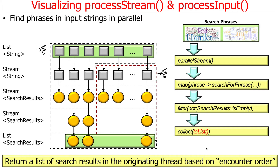The results are joined back together in the originating thread based on the so-called encounter order. For example, if the phrases were the names of musical notes — do, re, mi, fa, so, la — then after searching and filtering, the results will come back in the same order: do, re, mi, fa, so. The default behavior gives back results in encounter order. The computations all run independently in whatever non-deterministic order is most efficient, but results are put back in encounter order. If you don't like that, you can pass an unordered flag and get them back in non-deterministic order.